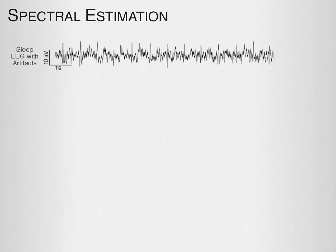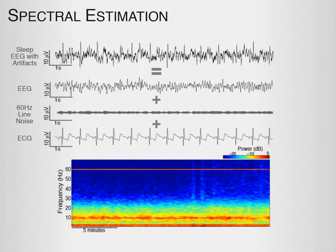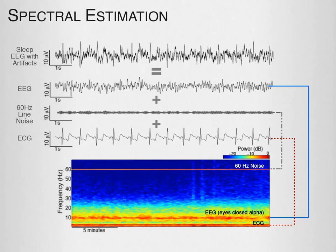Here is some real EEG data that would often be considered corrupt with artifacts and discarded. This signal is a mixing of the EEG signal, ambient line noise, and ECG data. One of the nice things about spectral analysis is it breaks the signal down into each component frequency. In this case, each contributor resides at a distinct frequency: line noise at 60 Hz, ECG around 1 to 2 Hz, and the actual EEG signal of interest as an evolving band around 10 Hz — representing the eyes-closed alpha oscillation as the subject starts falling asleep. Rather than discarding the data, we can separate out our desired signal from the confounding factors.